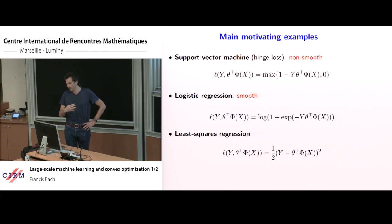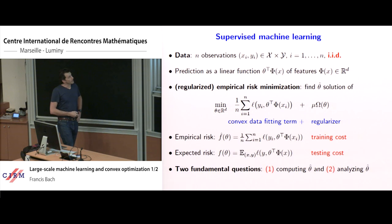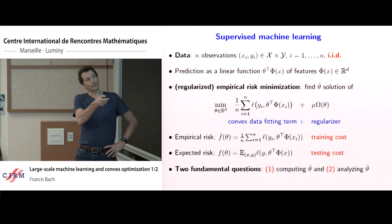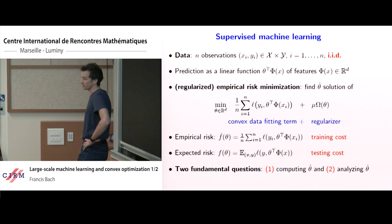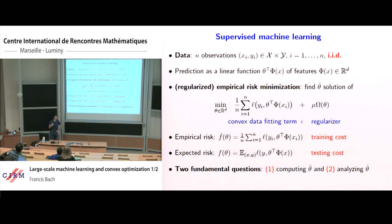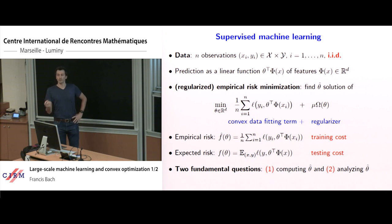Whenever you see a loss, think of any of those three. There are two important quantities: the training risk f-hat, which is the average loss on my training data, and the true risk, which is the expectation of the loss over the data distribution. My goal is to get a small value of the true risk. We consider linear predictions and assume the loss is convex. In this class I will consider the logistic loss for classification, not the zero-one loss.